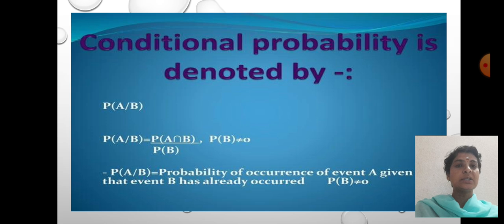Conditional probability is denoted by probability of A given B. Probability of A given B equals probability of A intersection B divided by probability of B. Probability of A given B equals probability of occurrence of an event A given that event B already occurred.